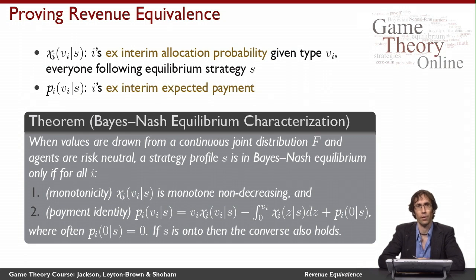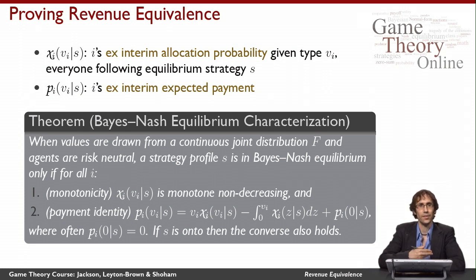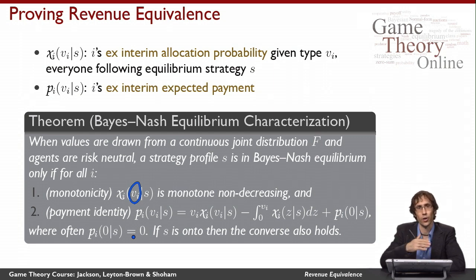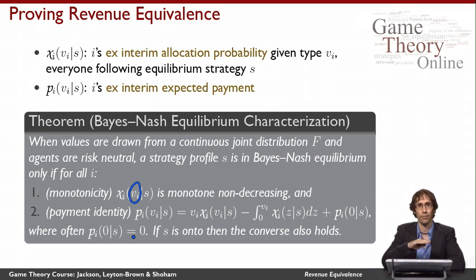This is a crucial theorem for mechanism design. When values are drawn from a continuous joint distribution f and agents are risk neutral, a strategy profile s is in Bayes-Nash equilibrium only if two conditions hold for all agents i. First, we need monotonicity: each agent's x-interim allocation probability needs to be monotone non-decreasing in that agent's value. In other words, as agents have higher and higher values for the good, their probability of getting the good — averaged across all other agents' types as well as potential randomness in the mechanism — needs to weakly increase.